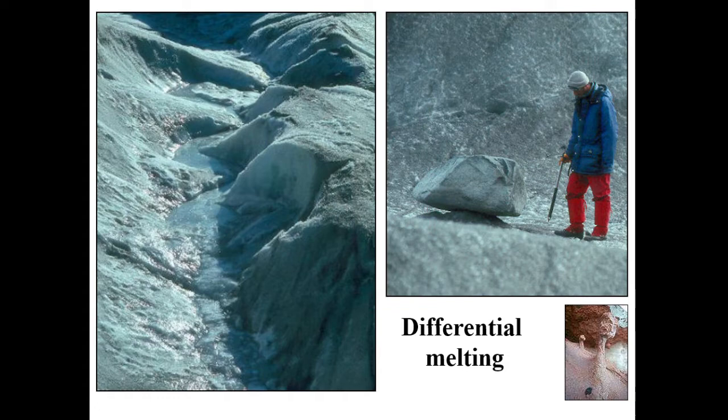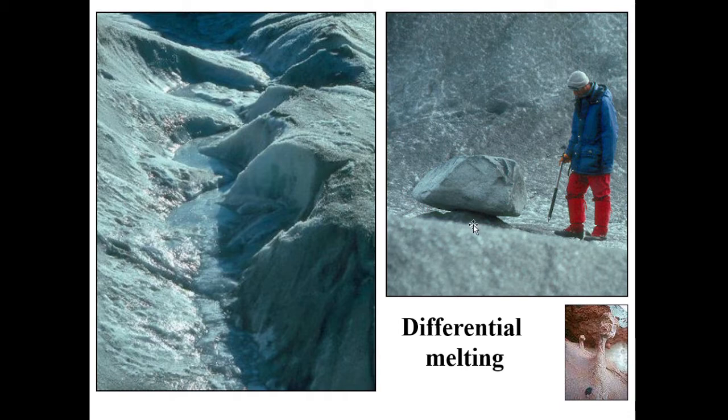Another important effect to think about is differential melting. The gross morphology of a glacier surface in the ablation zone is due to ablation, but melting doesn't happen evenly across the whole surface — there's a geographical pattern to the distribution of specific ablation. For example, here on the right-hand side we have a boulder on the glacier surface which is protecting the ice immediately underneath it from the sun, so while the surrounding ice melts away, a little pedestal forms underneath the rock, illustrating differential ablation.